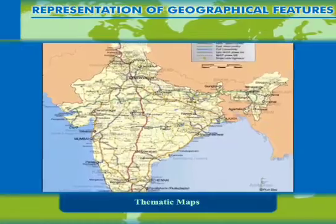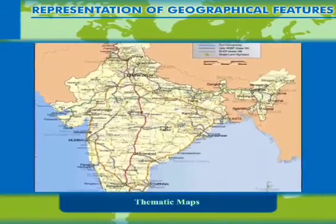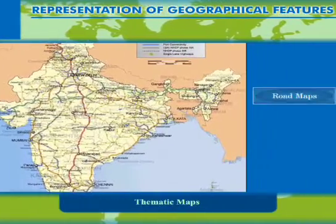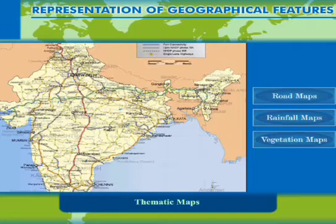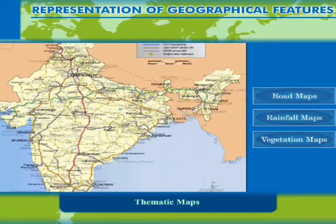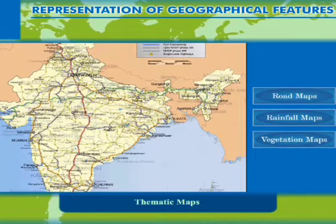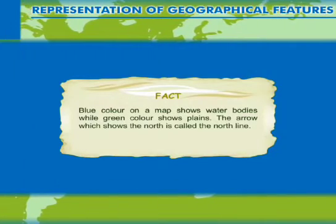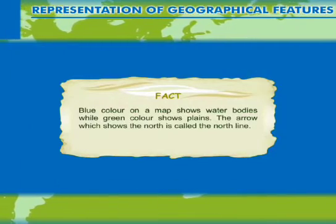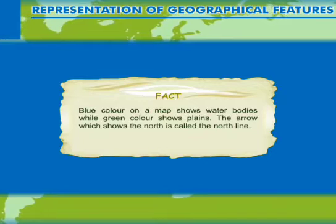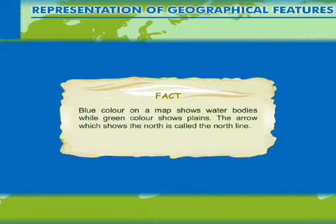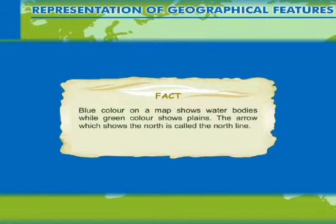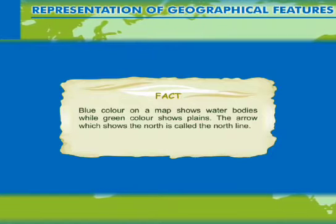Thematic maps, as the name suggests, have a specific theme or subject — they may be road maps, rainfall maps, vegetation maps, etc. On a map, blue color shows water bodies while green color shows plains. The arrow which shows the north is called the north line.